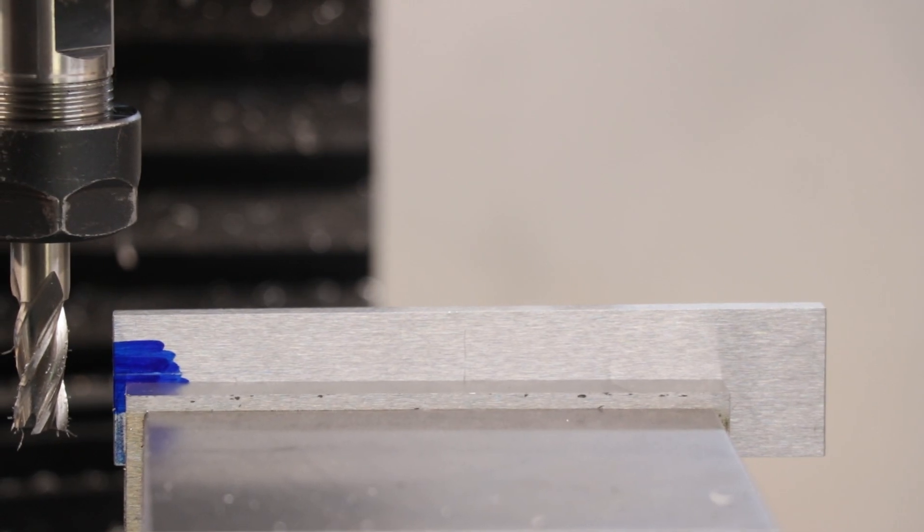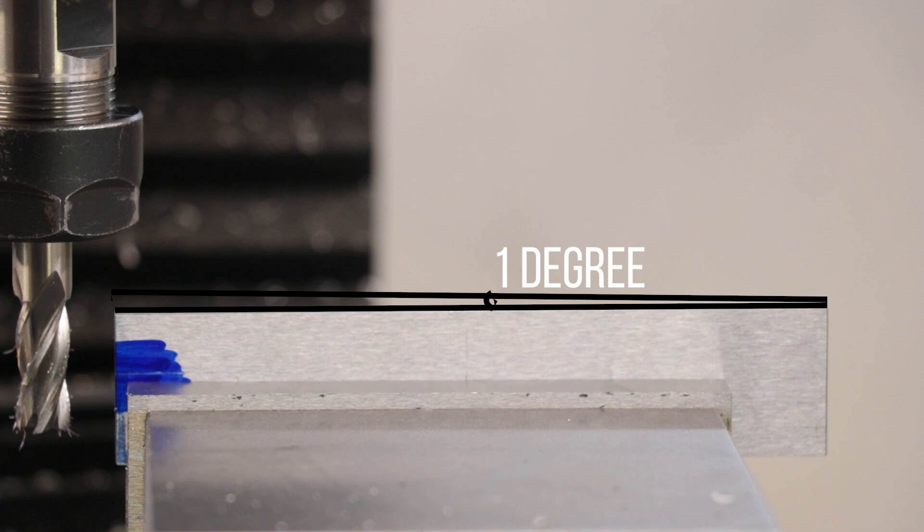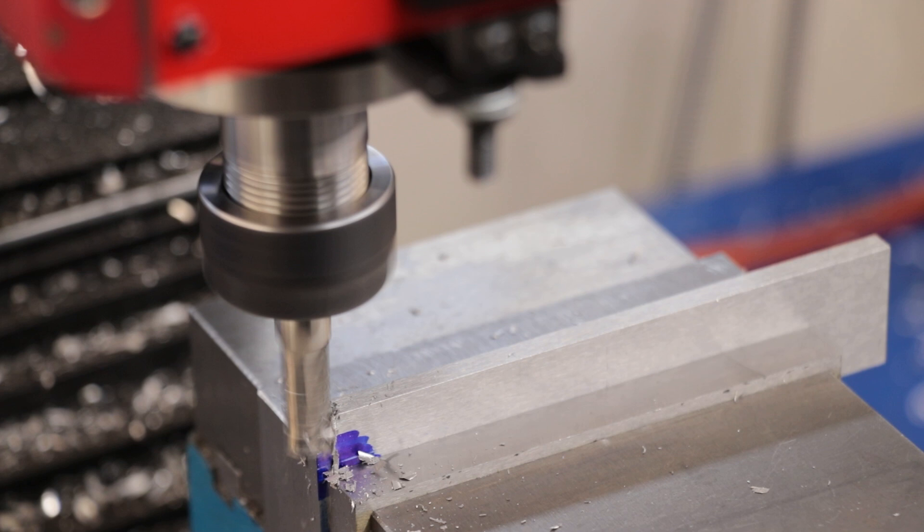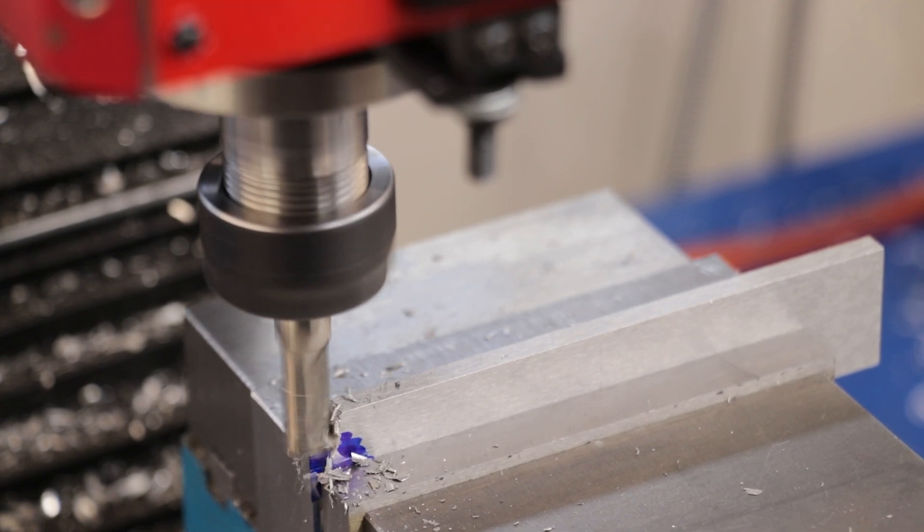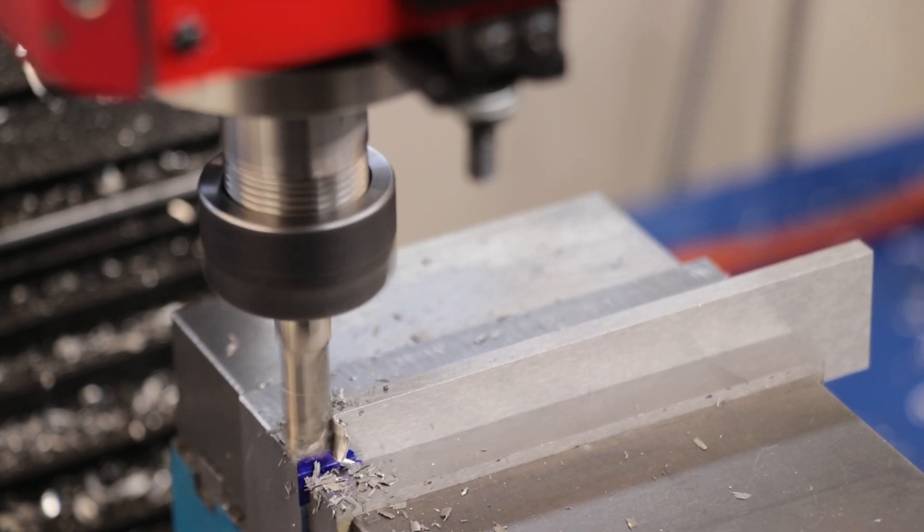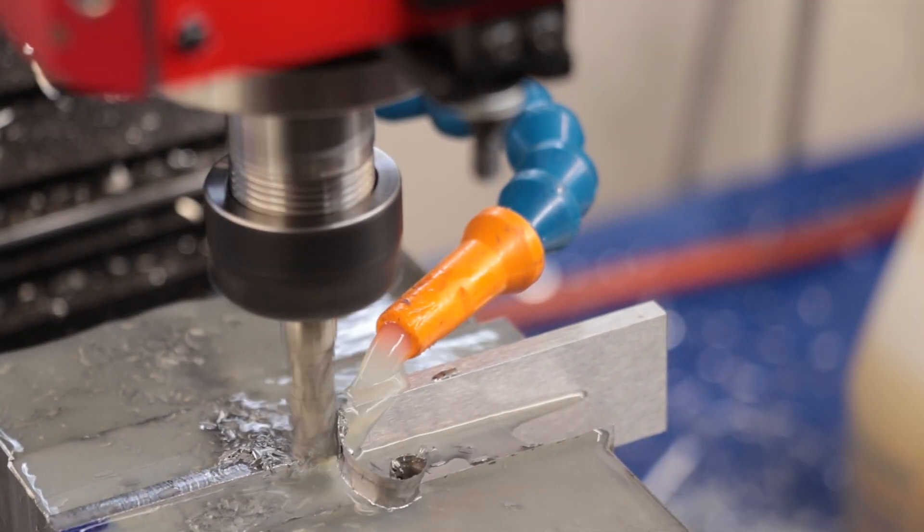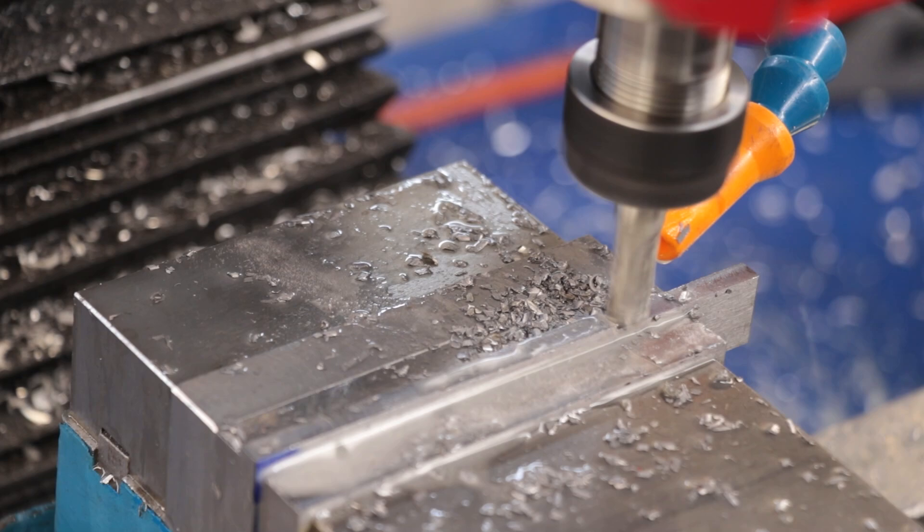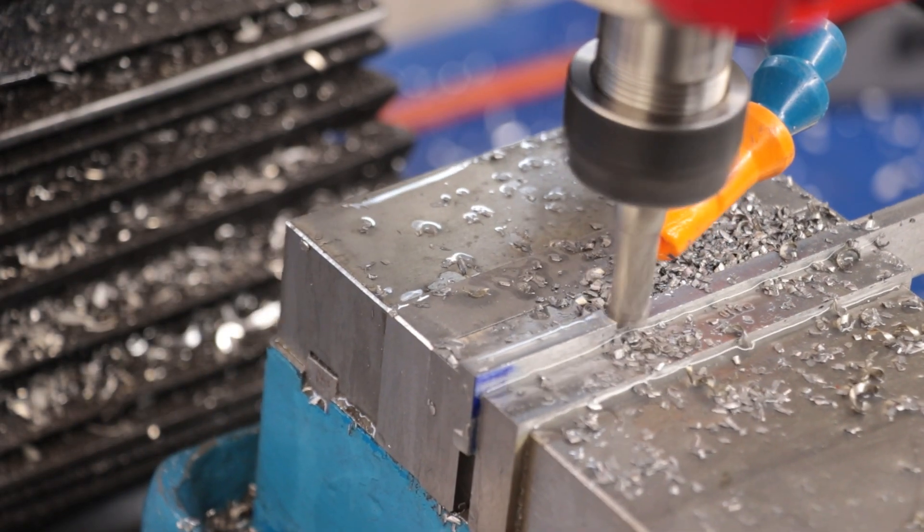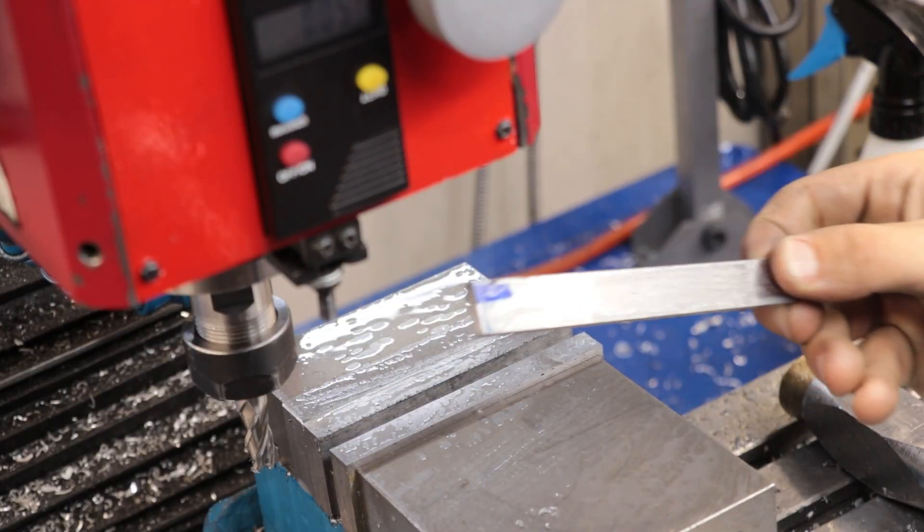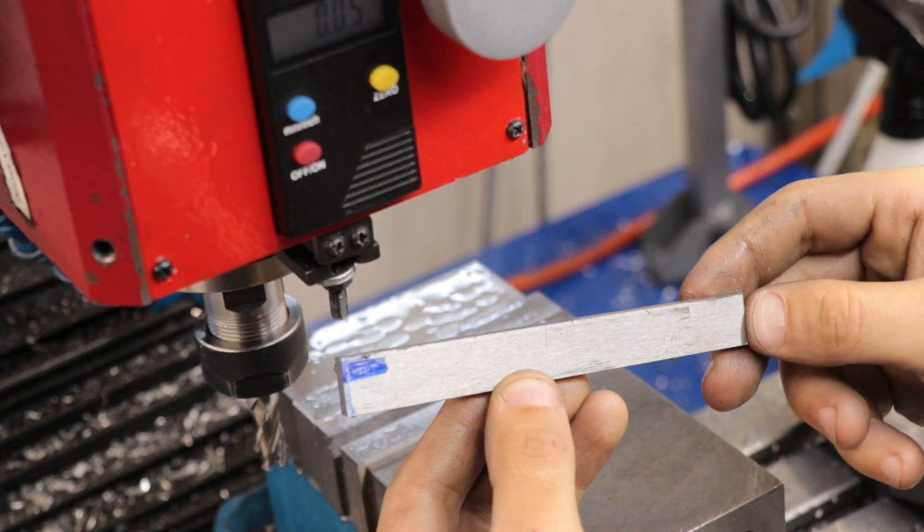So I've tilted the broach up at just under a one degree angle and I'll machine it down to the correct height. And this steel may be annealed but this stuff is pretty tough to machine. And with that done, let's get the teeth cut.